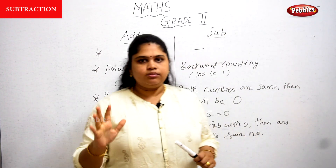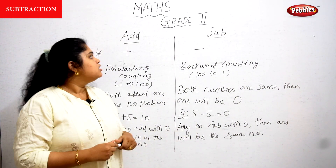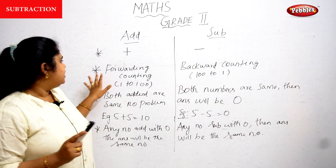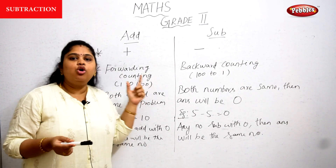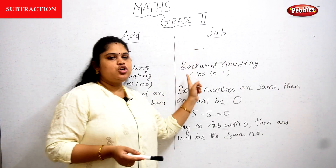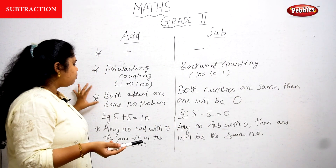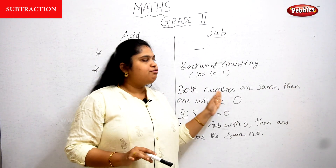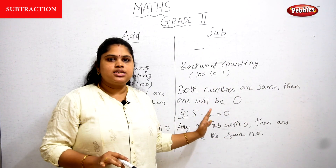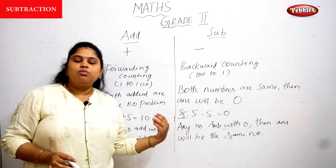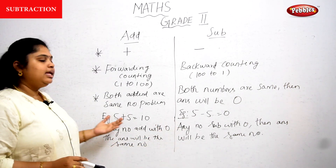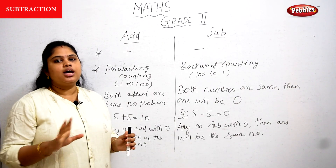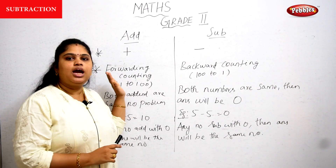So to summarize the difference: addition uses plus, subtraction uses minus. Addition uses forward counting 1 to 100; subtraction uses backward counting 100 to 1. If both numbers are the same in subtraction, the answer is 0. For both operations, any number with 0 gives the same number as the answer. I hope you all understand the difference between addition and subtraction.